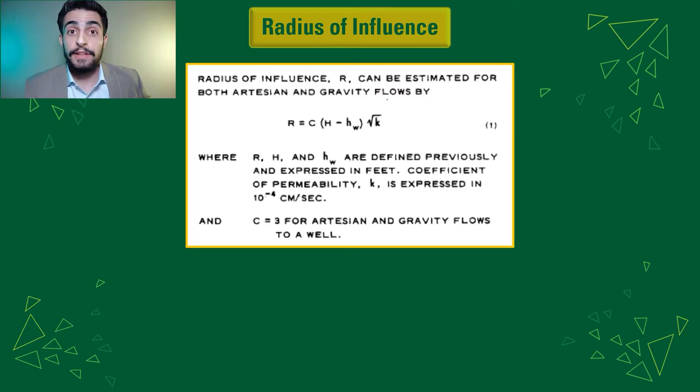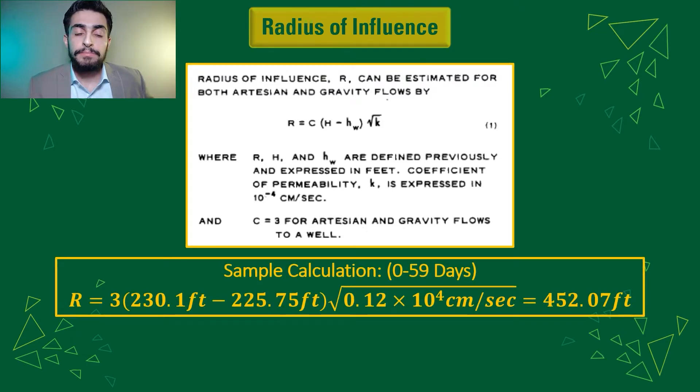And then, capital H is the initial water table elevation. HW is the water table elevation at the pumping location. And K is the permeability of soils expressed in 10 to the power of negative 4 centimeters per second. Plugging in all the values for the first period, we get a radius of influence of 452.07 feet.